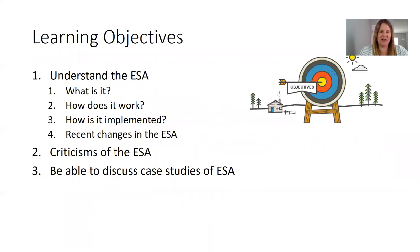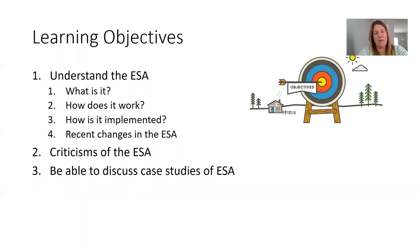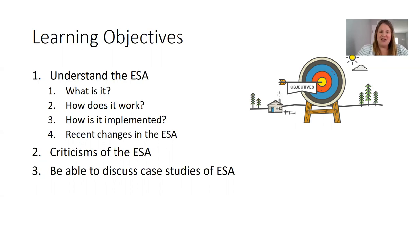So for the Endangered Species Act — or as you'll see, just the ESA — the learning objectives are: what is it, how does it work, how is it implemented, and some of the more recent changes implemented last September. We'll also go over some criticisms, and I want you to be able to discuss a few case studies. I have a few videos; we're going to do videos differently because the last two lectures the sound wasn't coming through well. When I get to the videos, I'll tell you what to do.